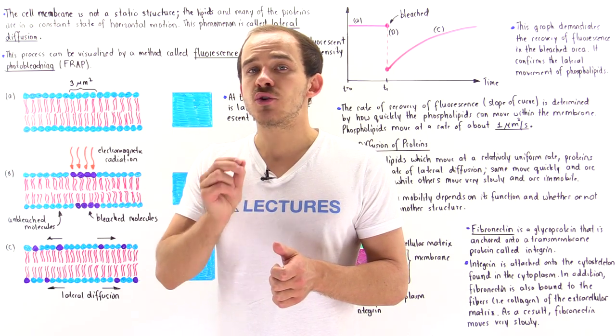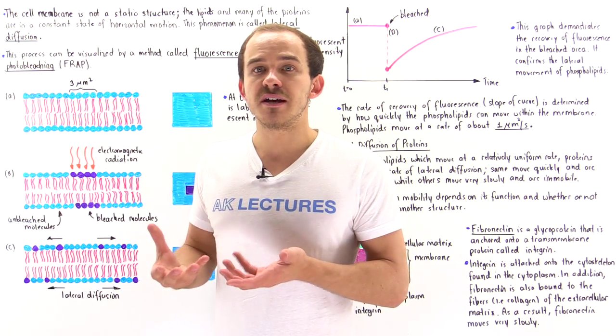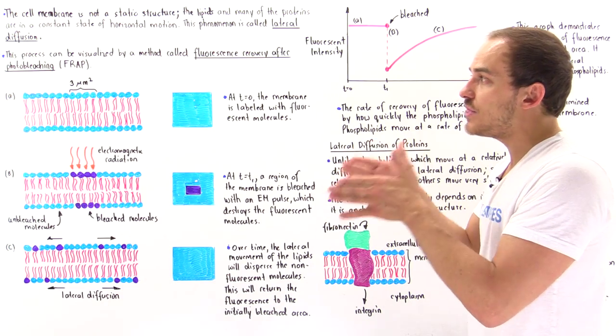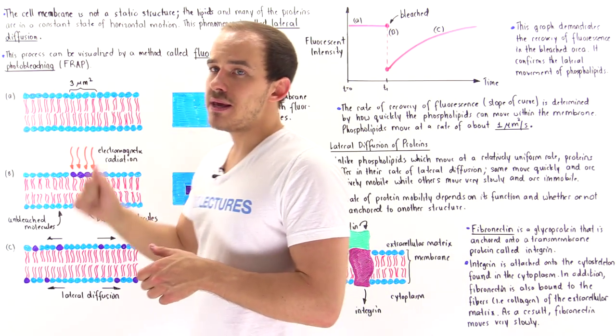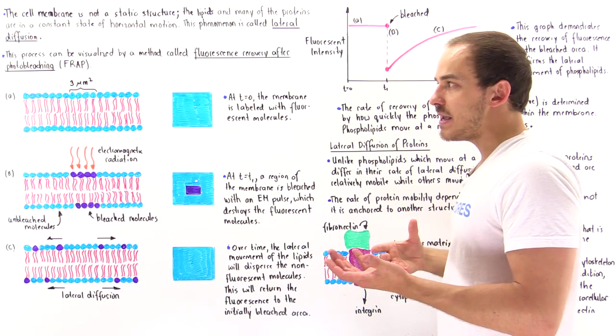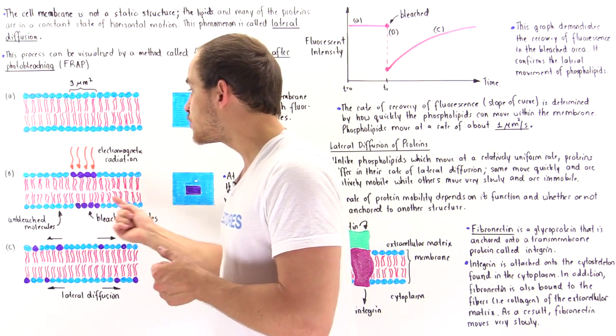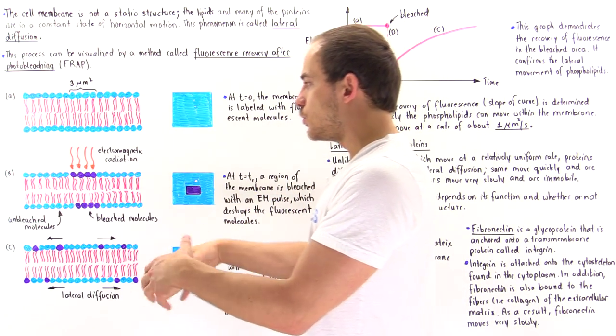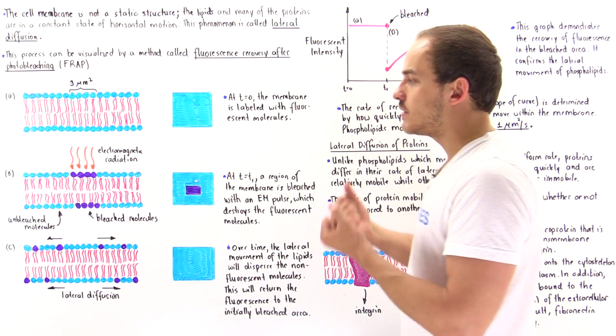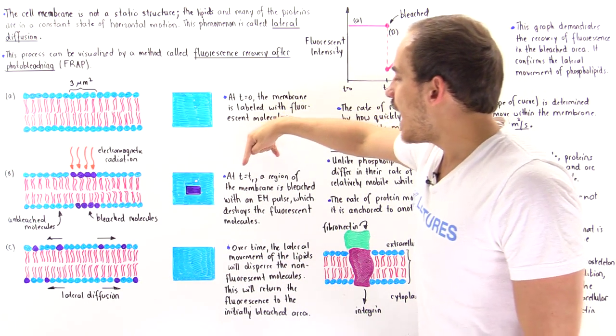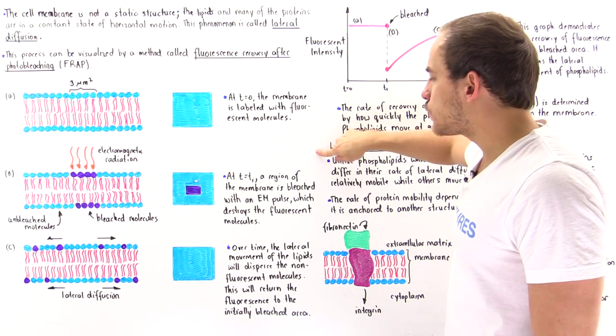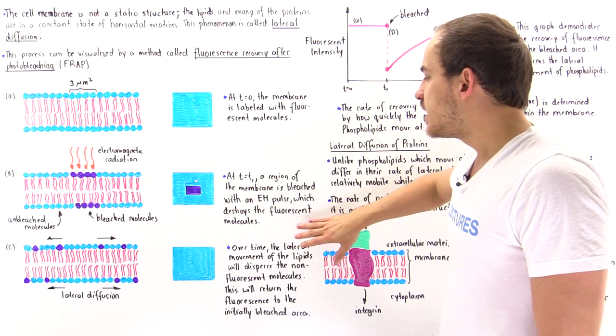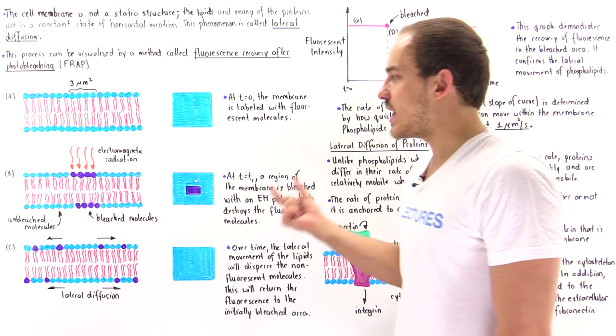And what we do is we direct electromagnetic radiation, an electromagnetic pulse, for example, a high intensity laser pulse. We direct it exactly at that 3 micrometers squared area. And what that does is it bleaches that area, it destroys those fluorescent molecules. And now if we examine those molecules, they will not essentially display that color. So at a time of T1, a region of the membrane is bleached with an electromagnetic pulse, which destroys those fluorescent molecules in that region.